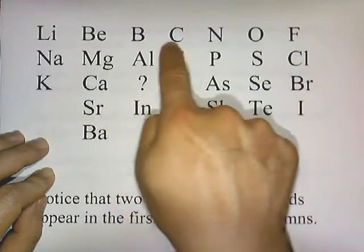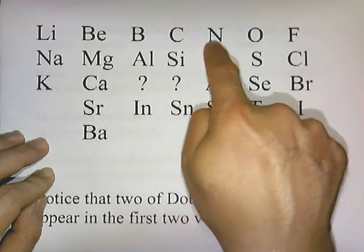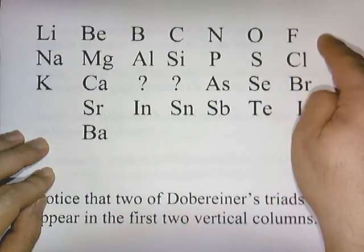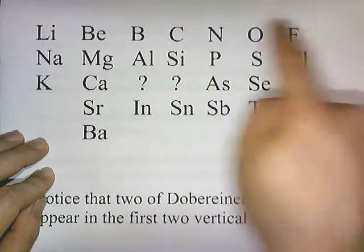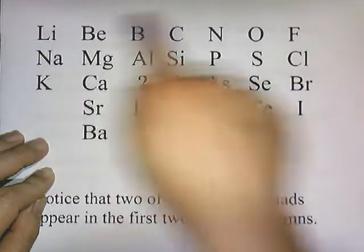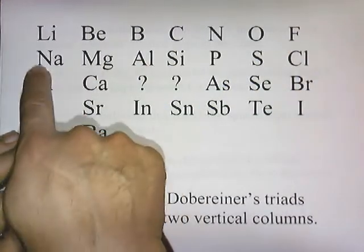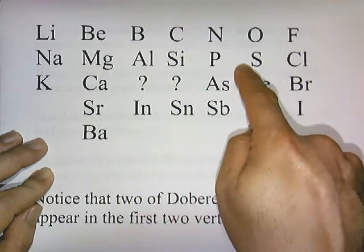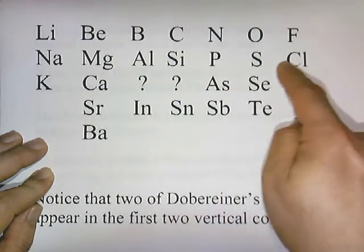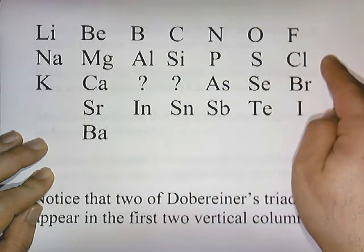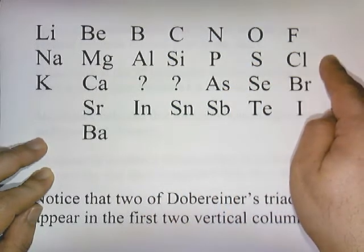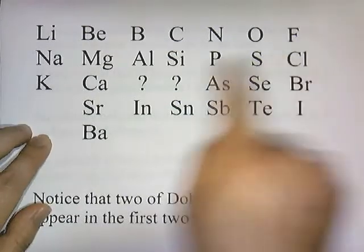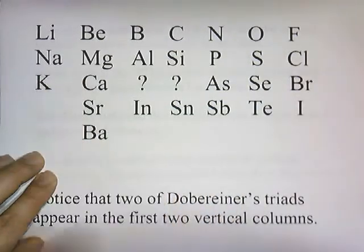He went lithium, beryllium, boron, carbon, nitrogen, oxygen, fluorine — and after fluorine comes sodium, but sodium has properties similar to lithium, so he started a new row: sodium, magnesium, aluminum, silicon, phosphorus, sulfur, and chlorine. After chlorine comes potassium, but potassium's properties are similar to lithium and sodium, so he started a new row again.